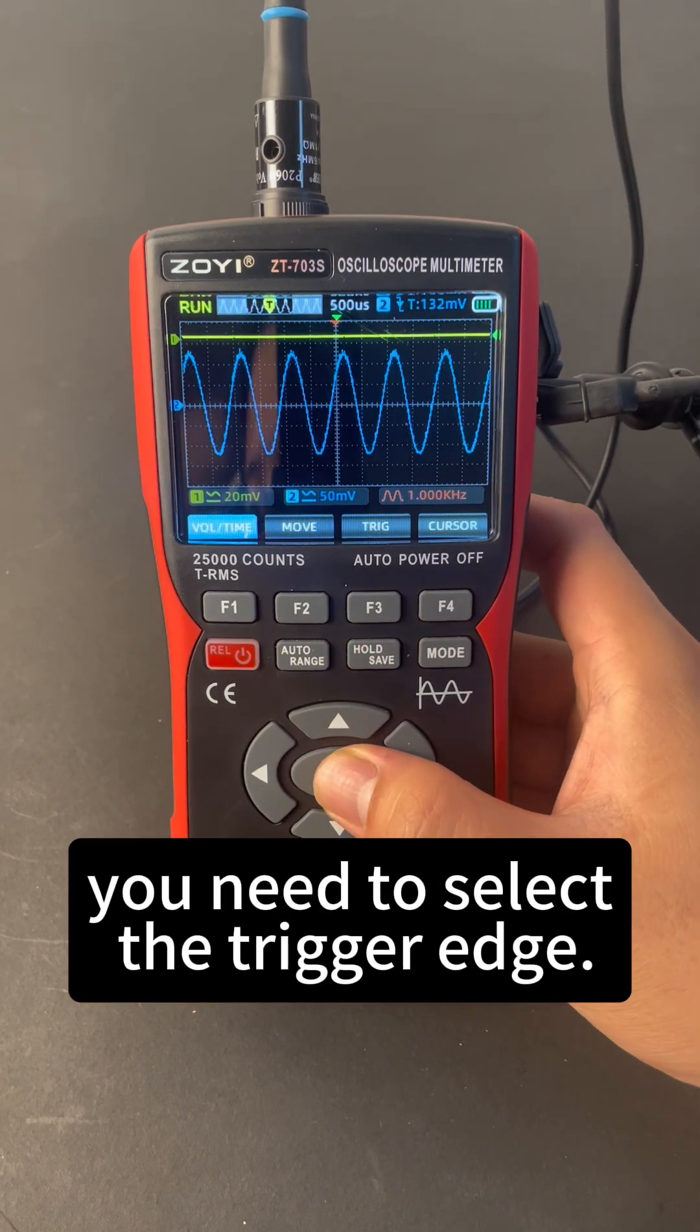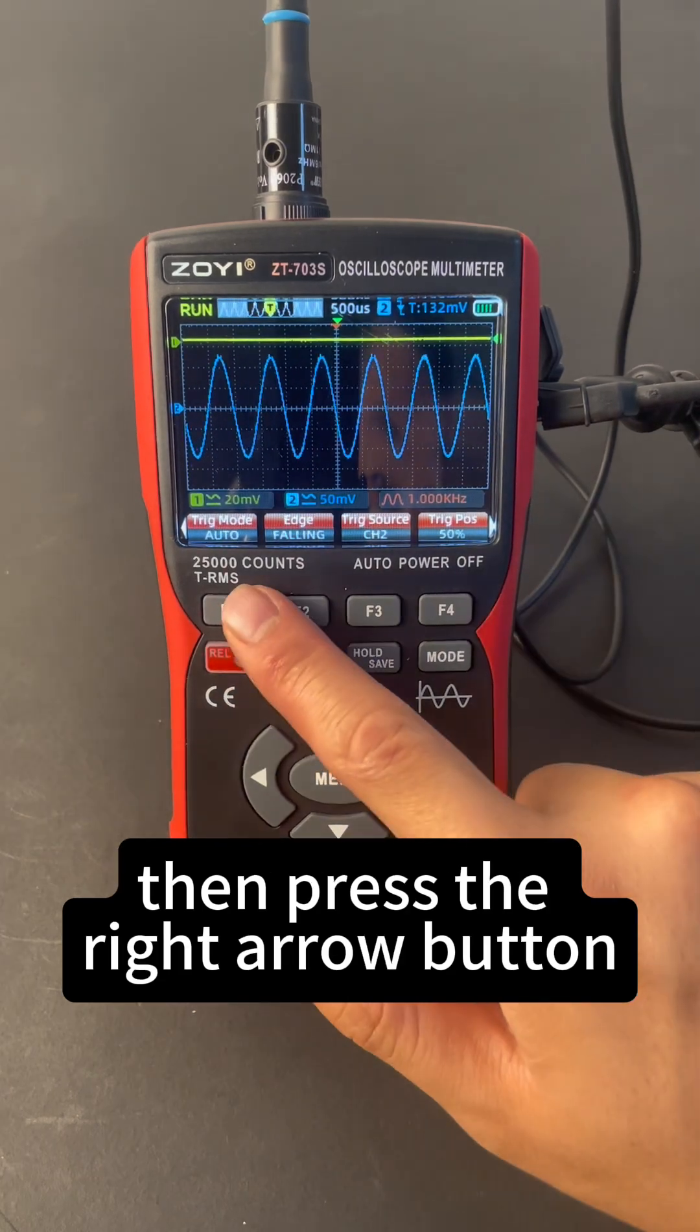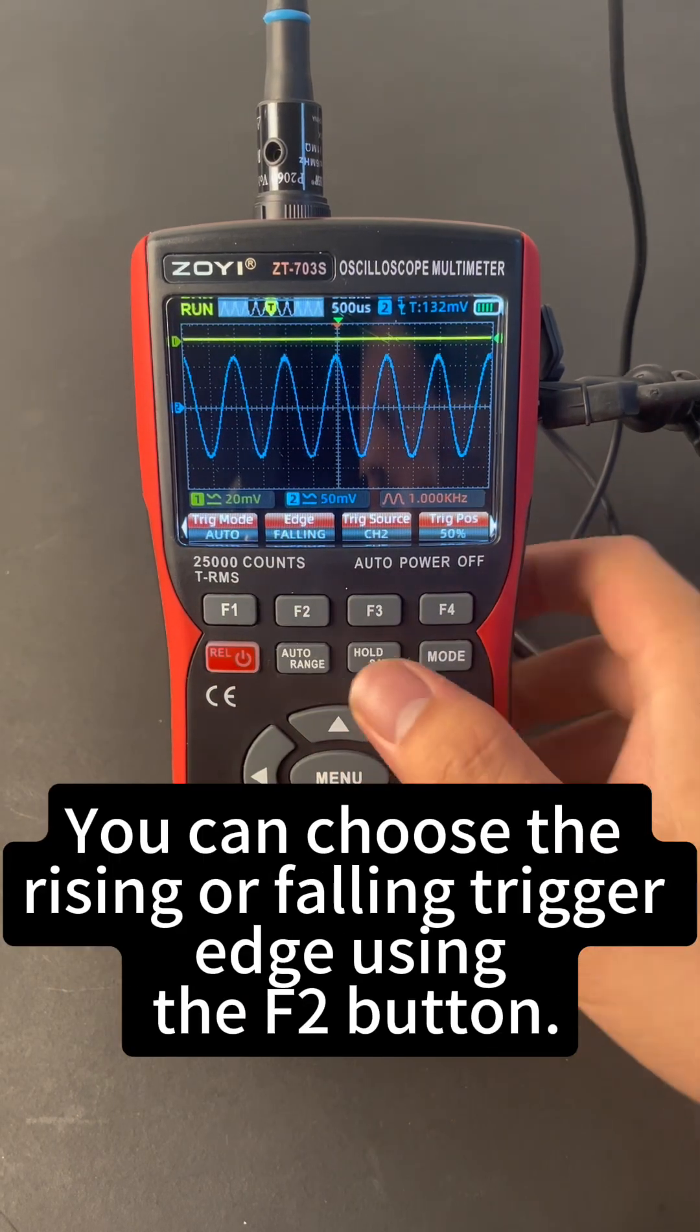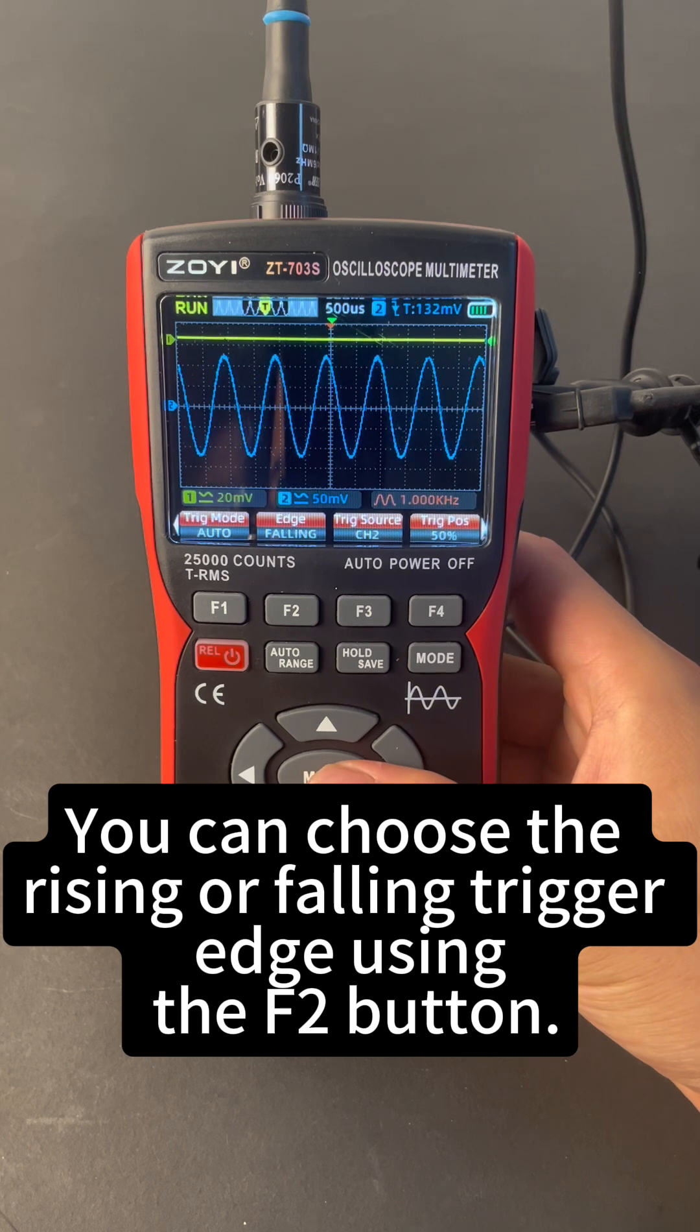First, you need to select the trigger edge. Press the menu button, then press the right arrow button. You can choose the rising or falling trigger edge using the DF2 button.